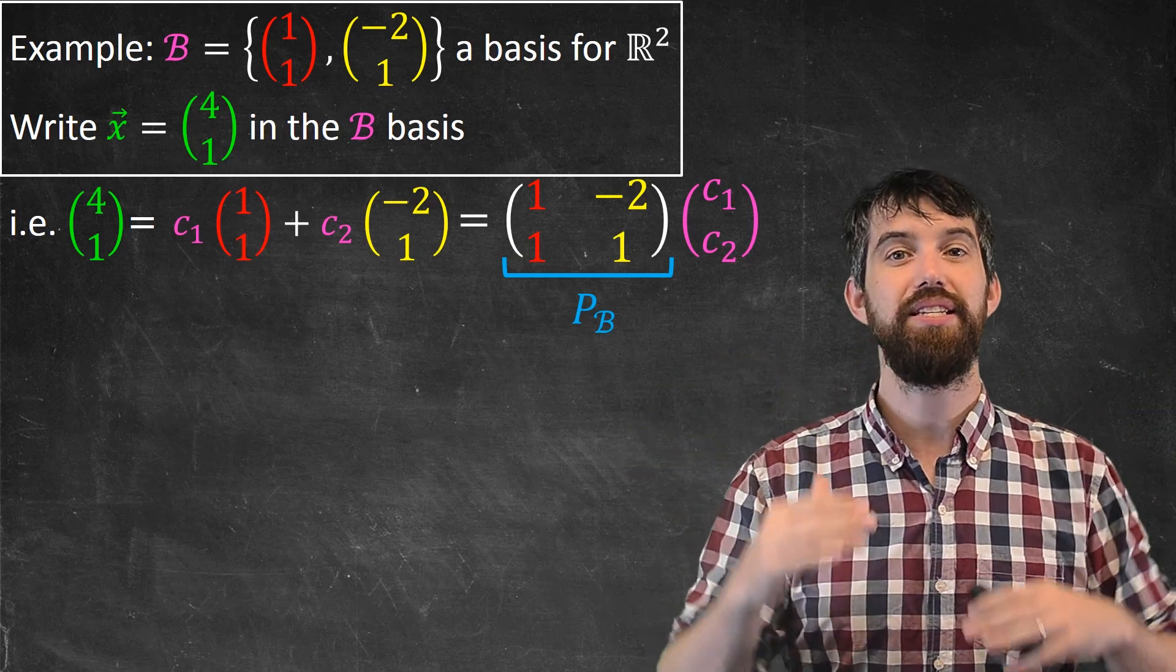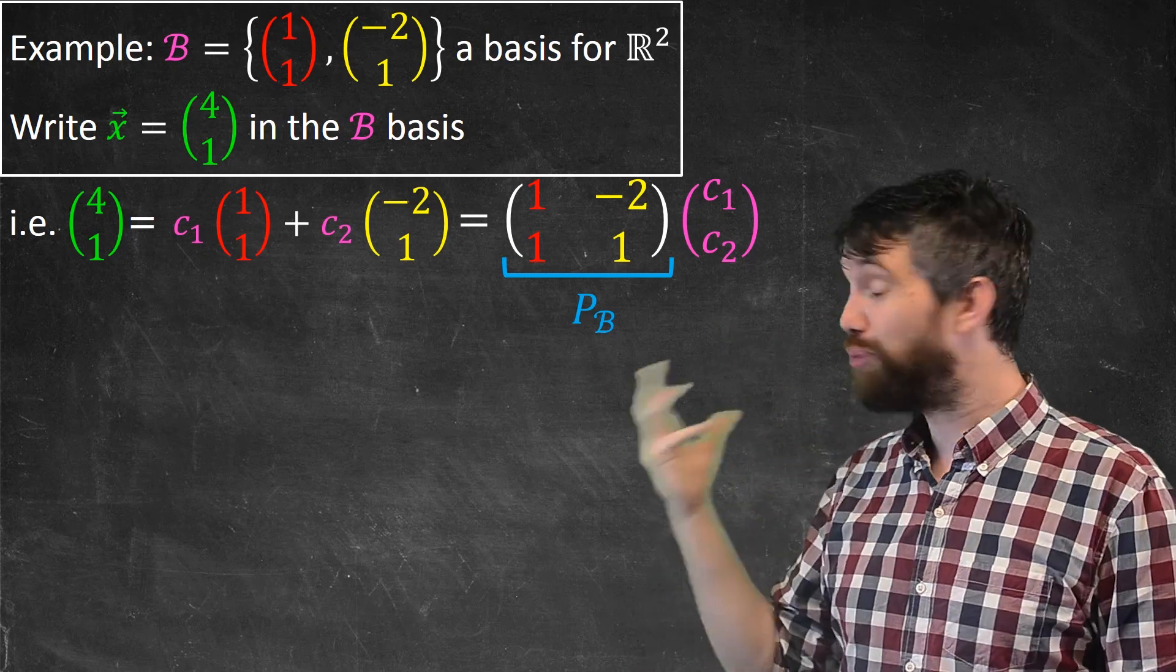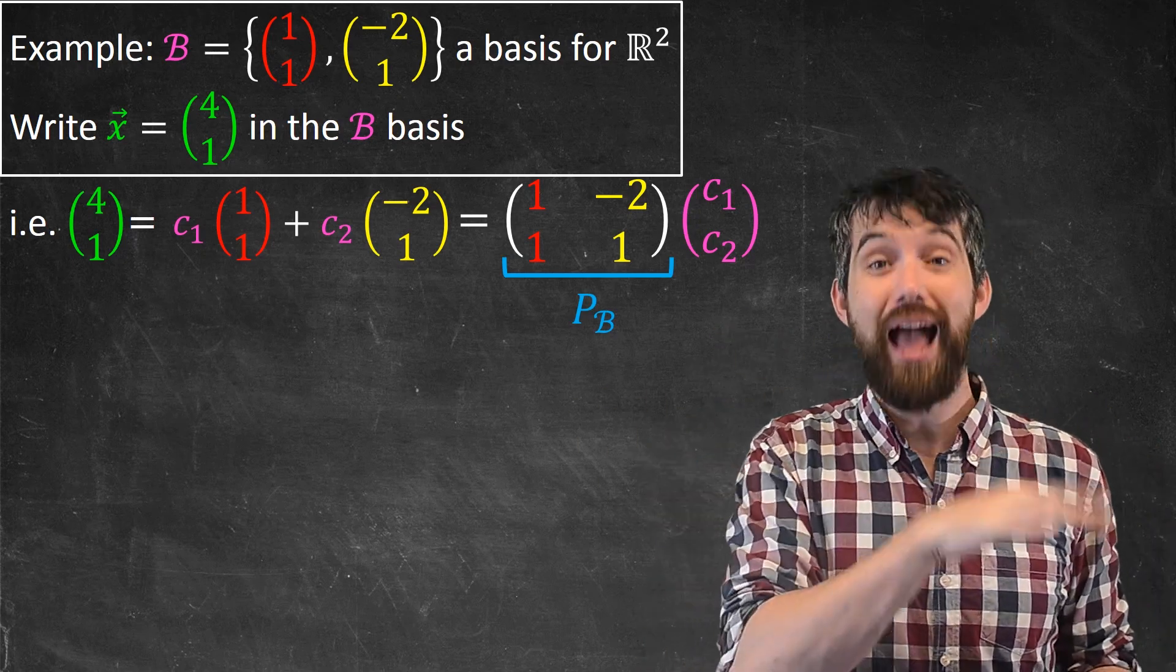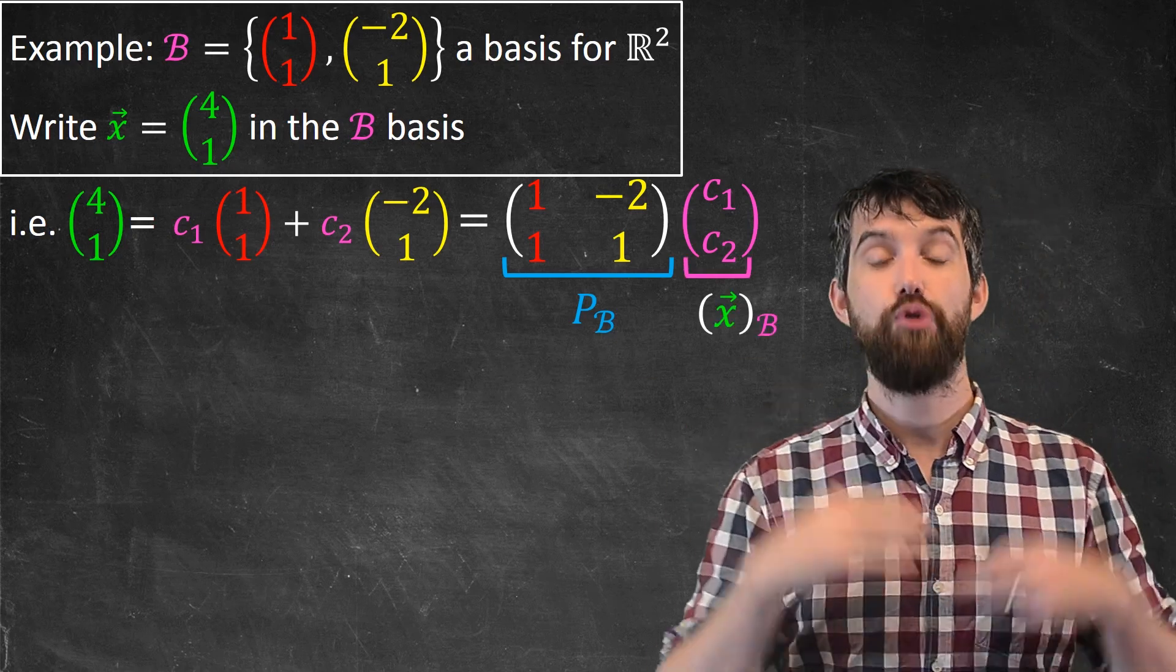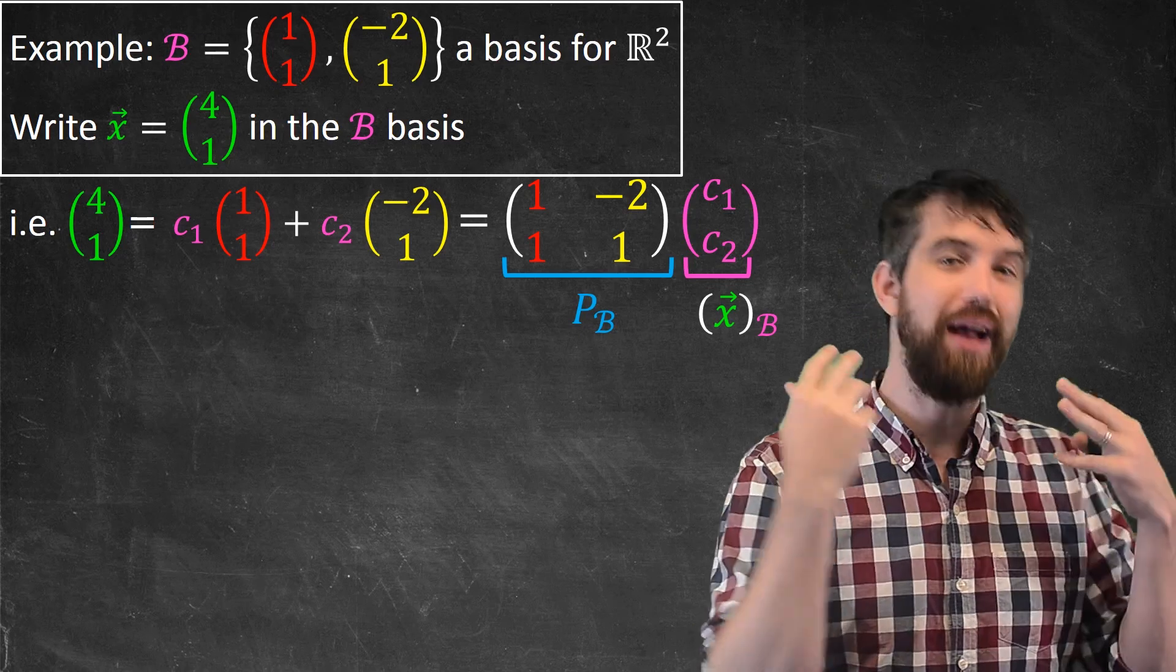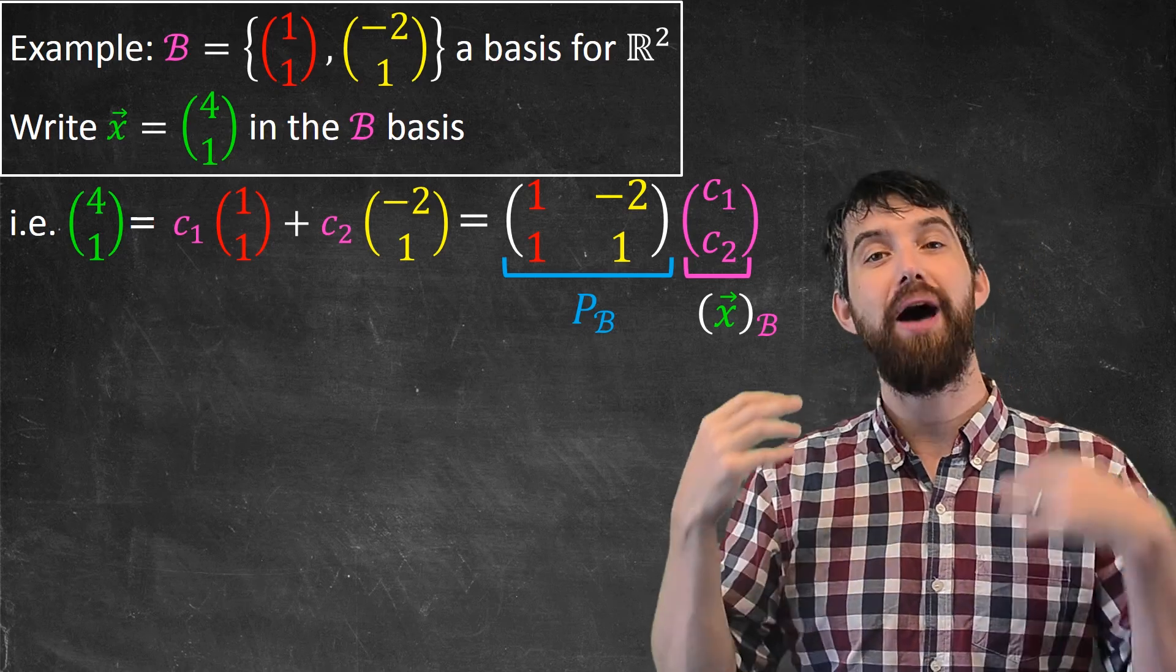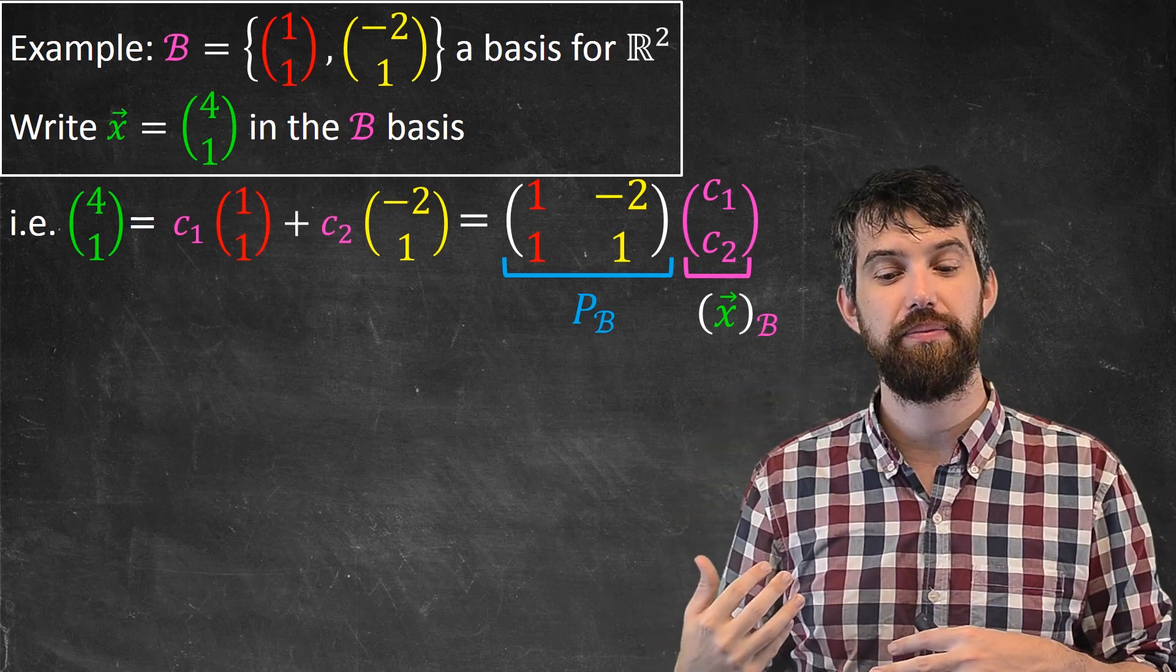And then the other thing to note is that the c_1, c_2, we previously defined that to be the vector x written in the B basis. So this is just going to be my vector x written in the B basis. If (4,1) is my x, then the c_1, c_2 is my x written in the B basis.